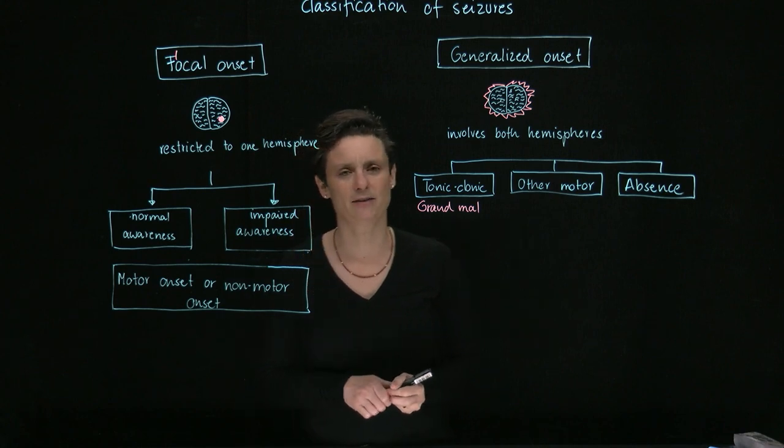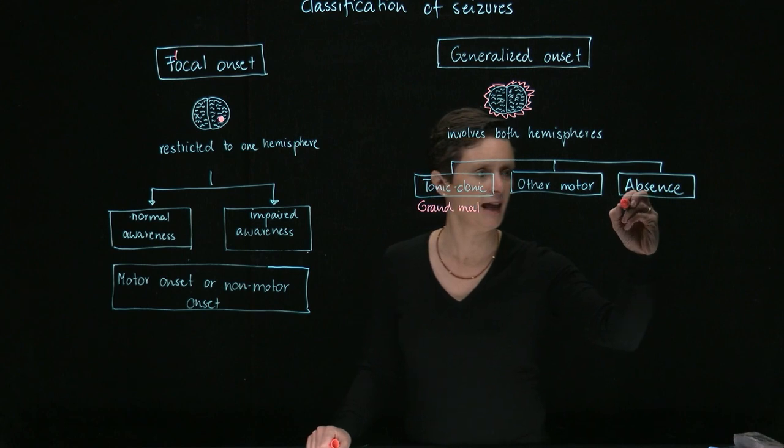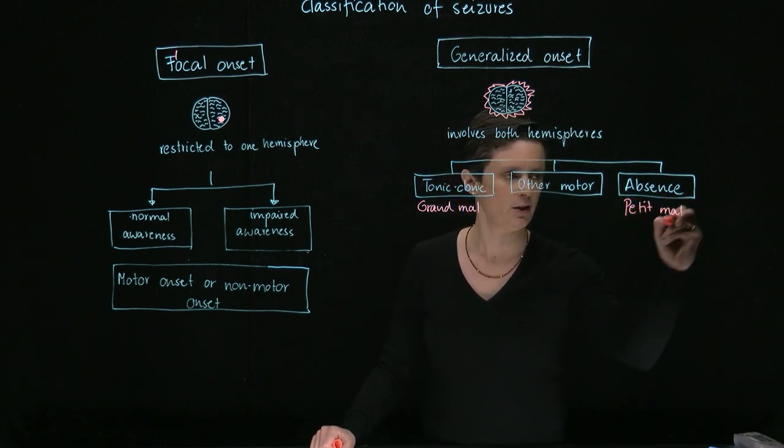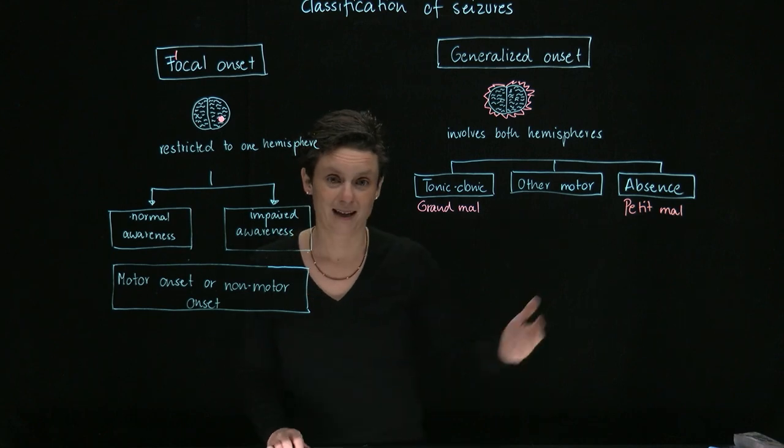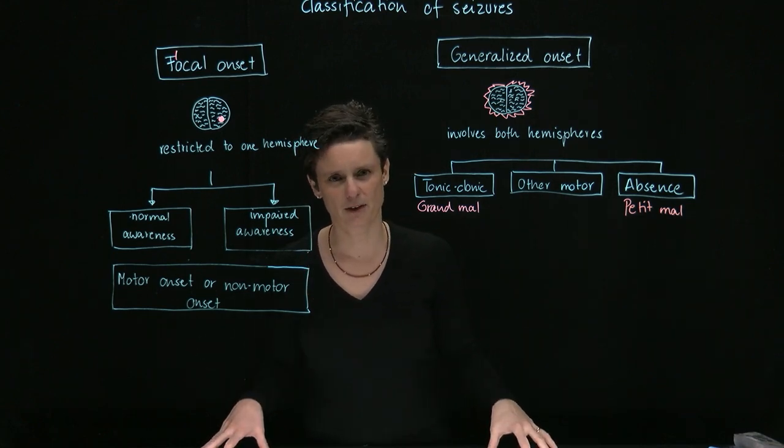And then there is a very special type of generalized onset seizure. This is absence seizure. And that's also sometimes referred as petit-mal seizure. So petit for small, malaise, disease, so small disease. And this is predominantly found in kids.